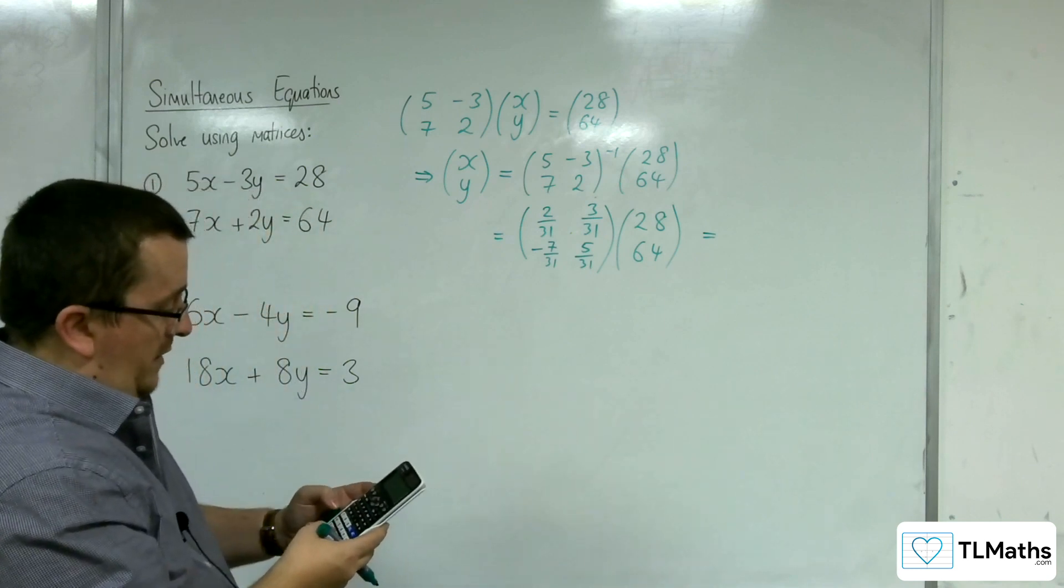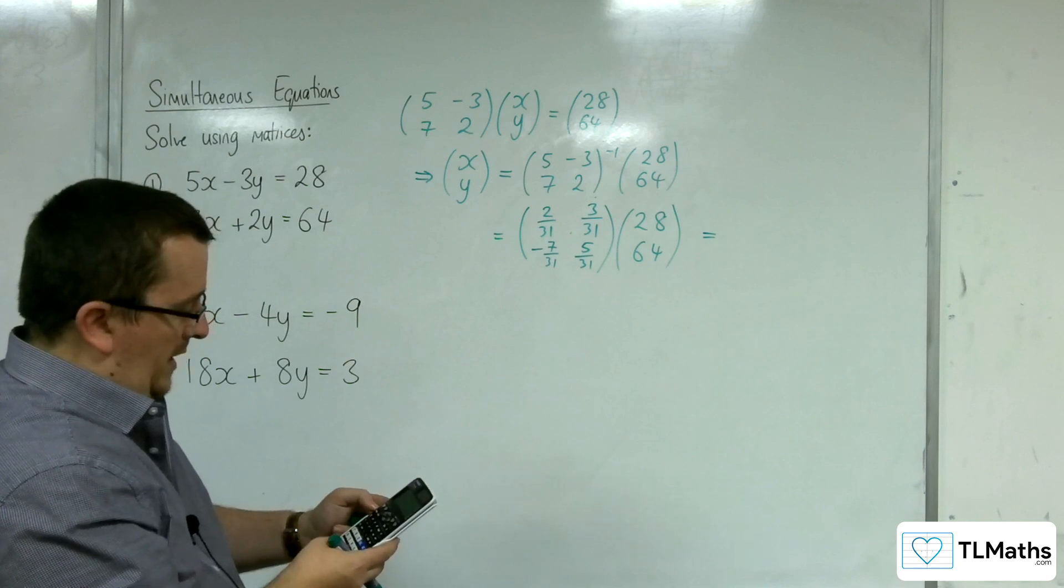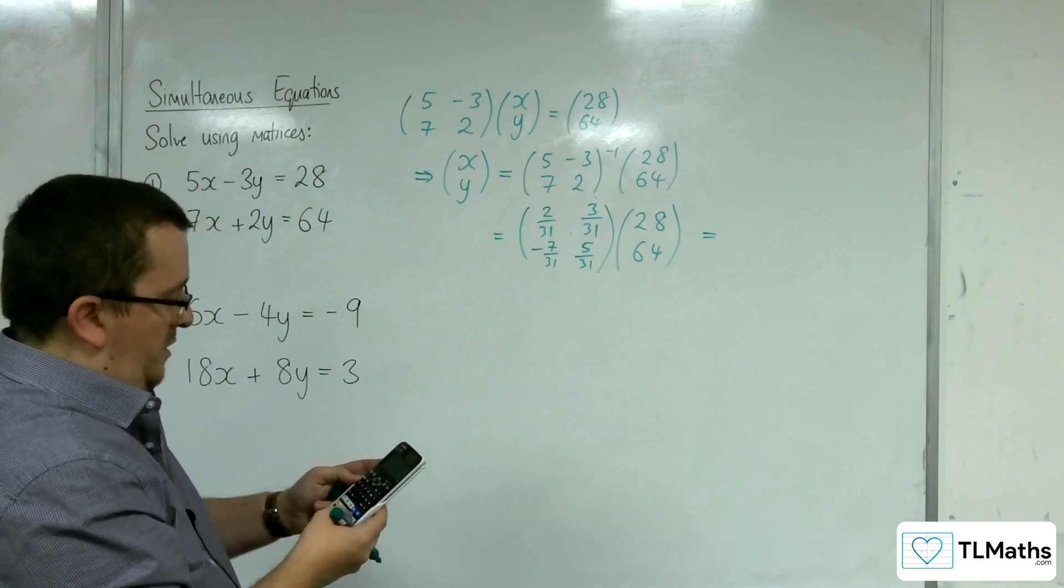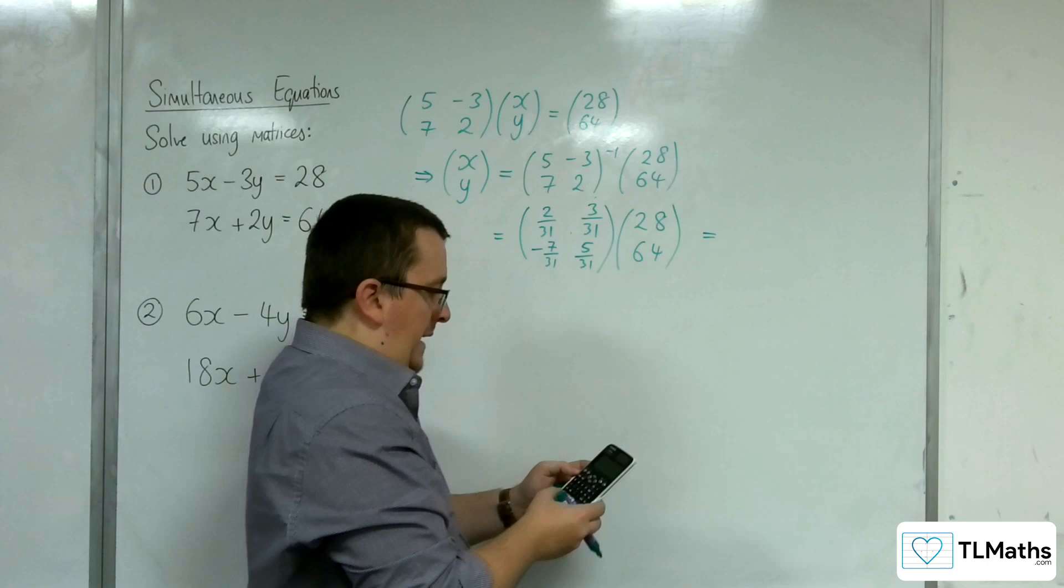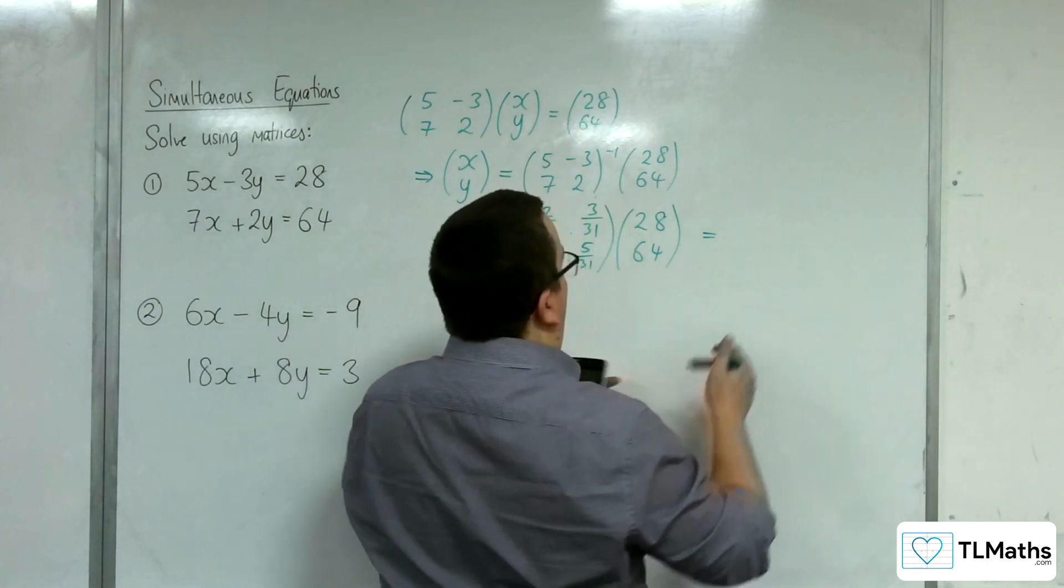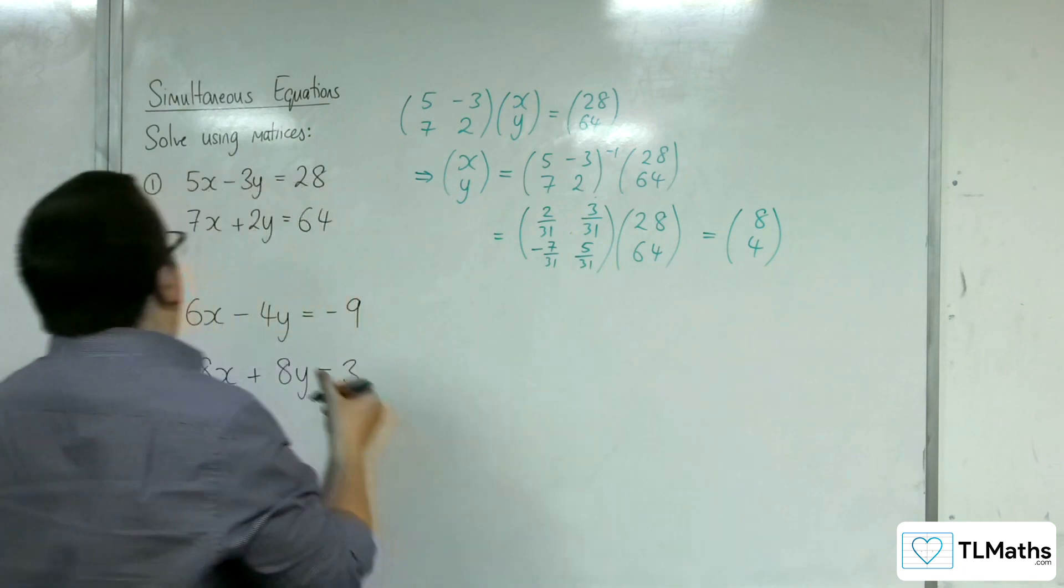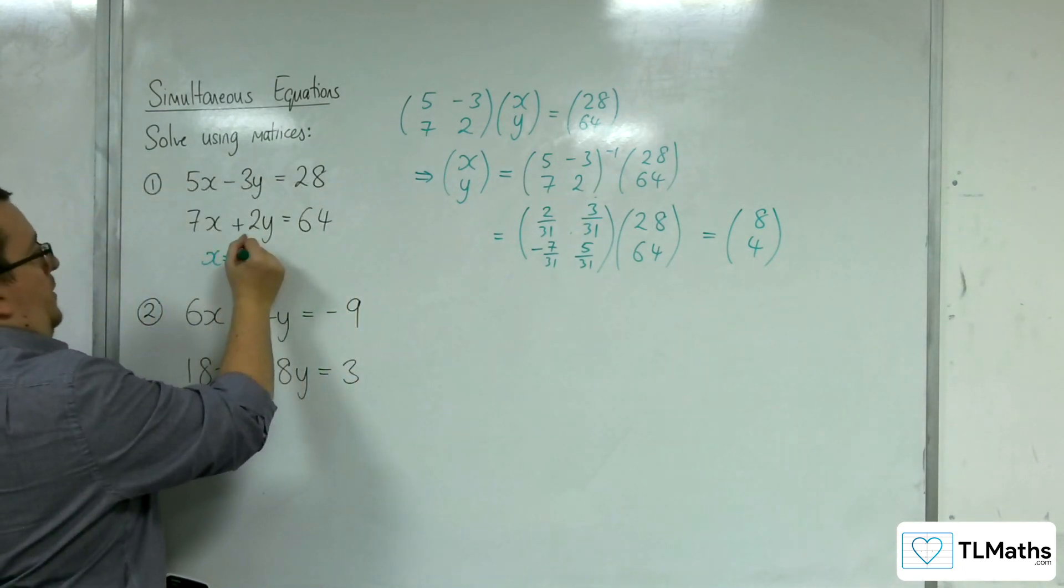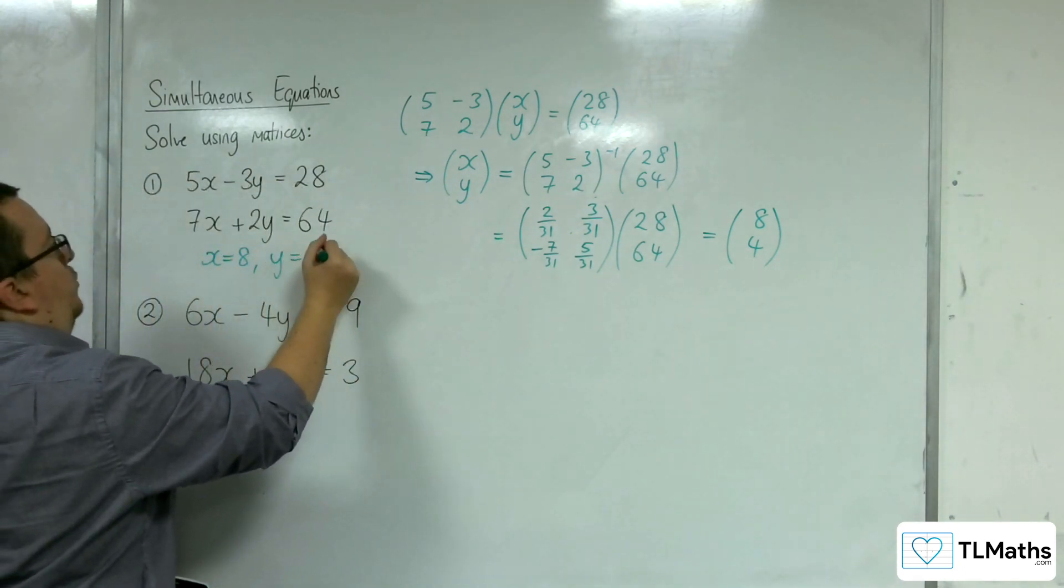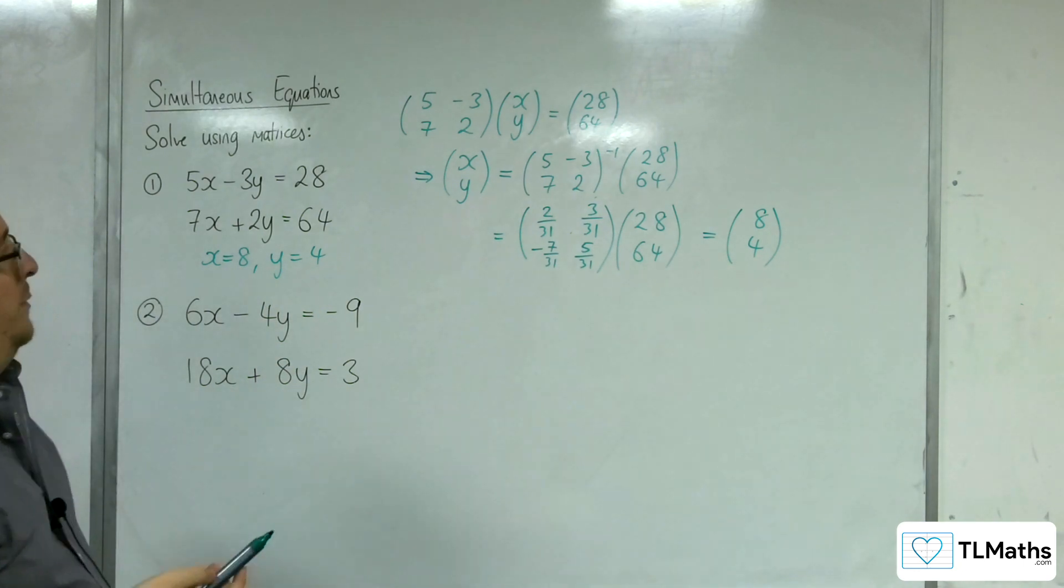Then matrix calculation, we're going to do matrix A to the -1 times by matrix B. And we get 8, 4. So x equals 8, y equals 4. Solves those simultaneous equations.